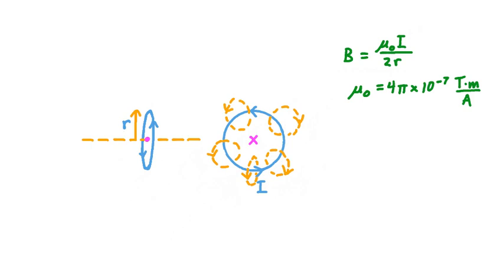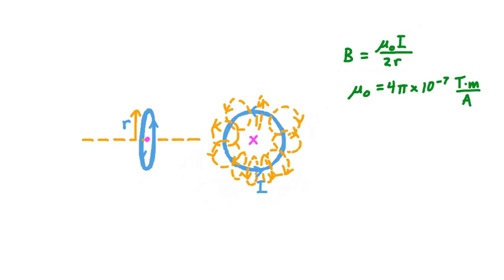So far we've been considering a circular current of just one loop, or one turn. In general, it's possible to have more — two, ten, or hundreds of loops. In many cases, all of these different turns are part of the same circuit, a coil of wire all carrying the same current I. In the case of multiple loops, that has an effect on the strength of the magnetic field created.